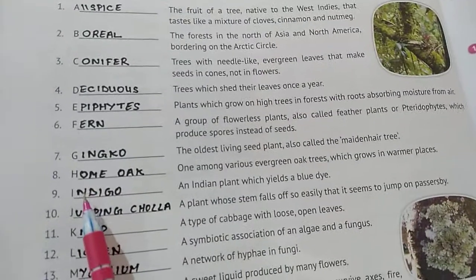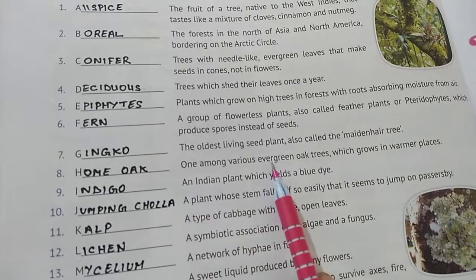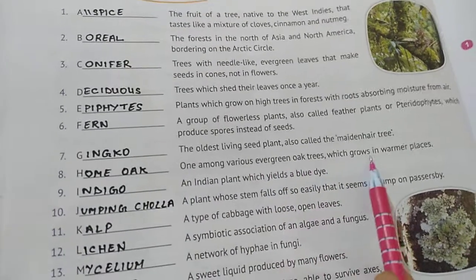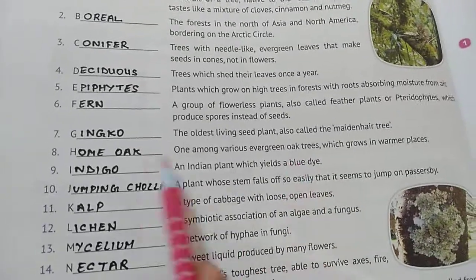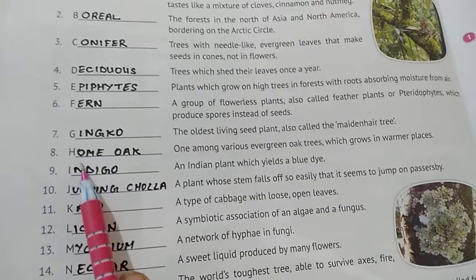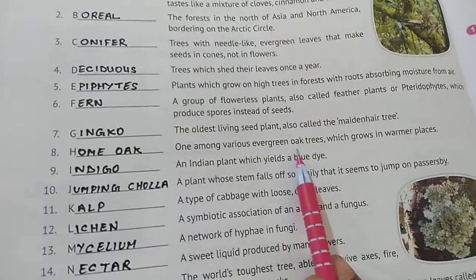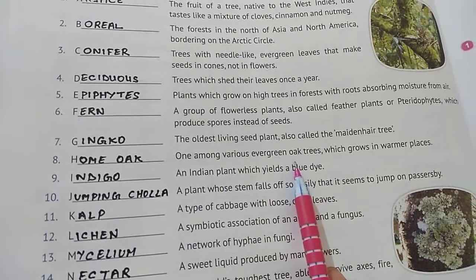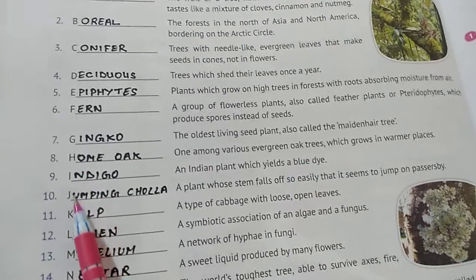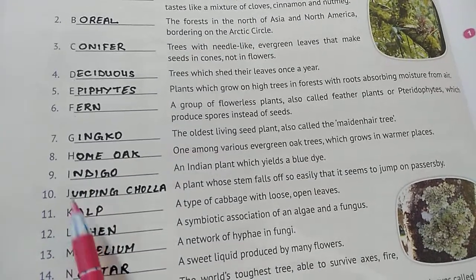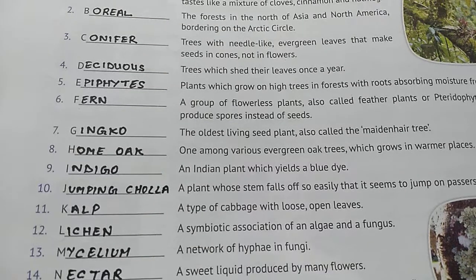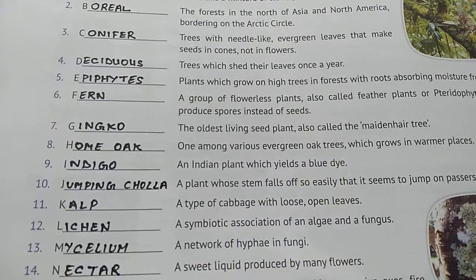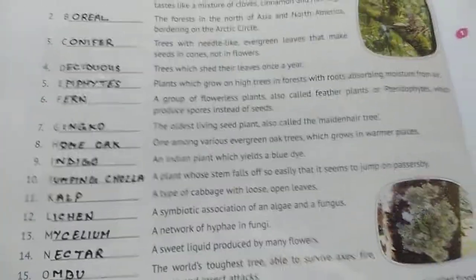Number eight: one among various evergreen oak trees which grows in warmer places. We have to be particular about the name because the first letters are given here. The name is holm oak.